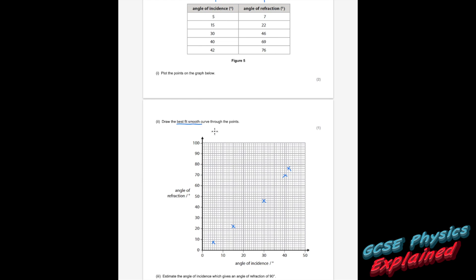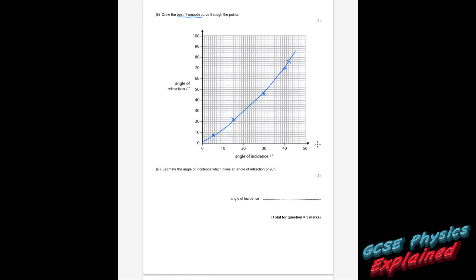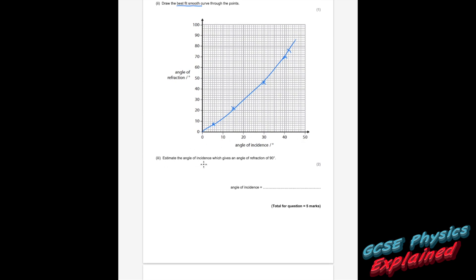Draw the best smooth curve. So start at the bottom, come up like that. Part 3. Estimate the angle of incidence which gives an angle of refraction of 90. If I just continue that a little bit more like that, angle of refraction of 90. Do your little dotty lines again. Go into the graph and then come down onto the x-axis with your dotty lines. What's that? 47 degrees. Now if your curve is slightly different than mine, it doesn't matter. As long as your results are about the same, which they will be. And then they always offer you a little range. So they'll probably say something like 45 up to 49 or something.